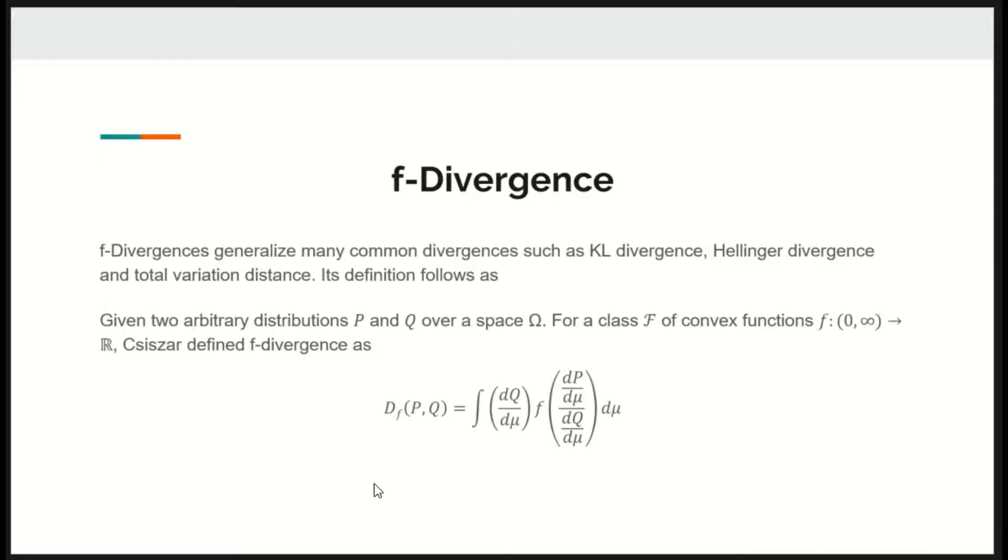It is defined as follows. Given two arbitrary distributions P and Q over a space Sigma, for a class F of convex functions F defined over positive reals, F-divergence is defined as follows.